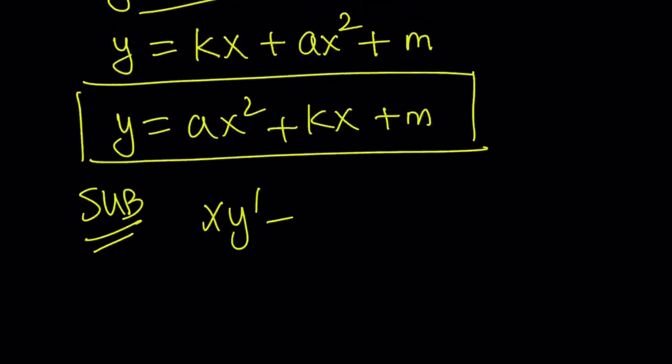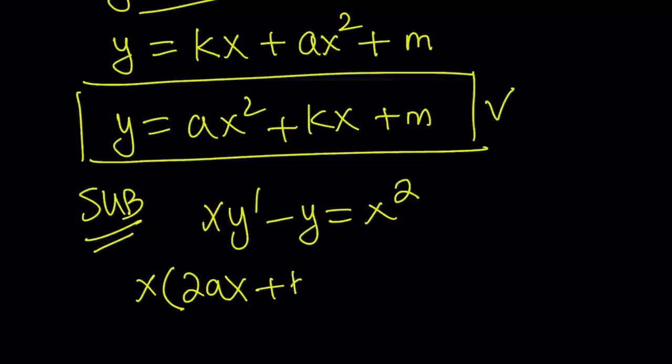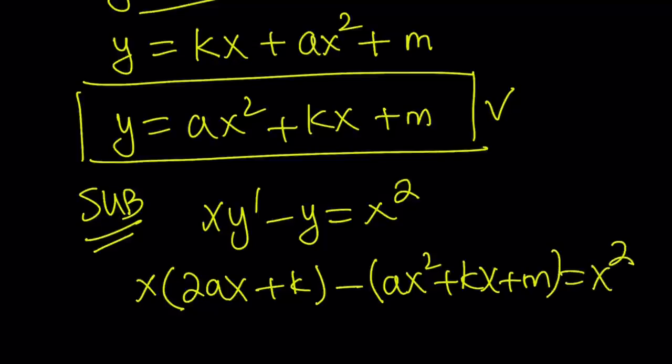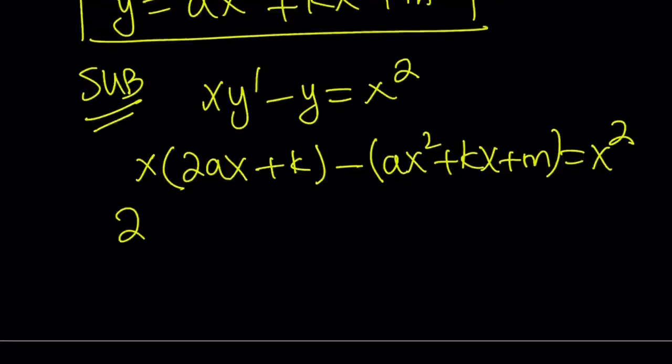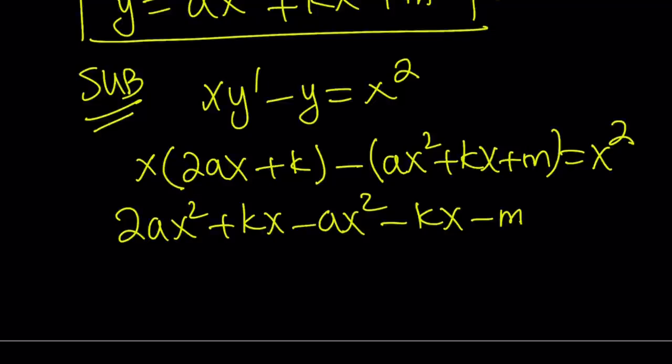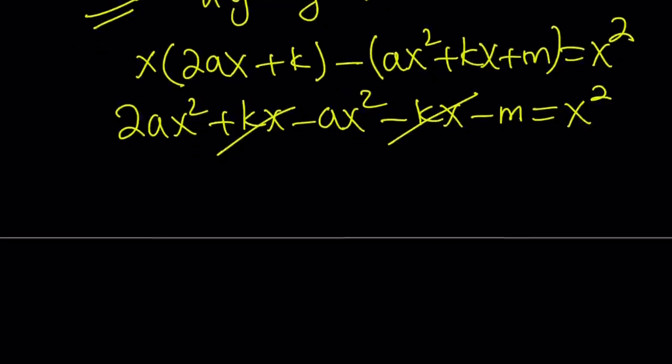Remember, we had xy prime minus y equals x squared. So x is going to be multiplied by y prime. Let's go ahead and differentiate this. This gives us 2ax plus k minus, if you subtract from this, the y itself, the difference should give you x squared. Now let's go ahead and simplify this. This gives us 2ax squared plus kx minus ax squared minus kx minus m. Notice that kx disappears because it's the solution to the homogeneous equation. Great. So they're going to cancel out, leaving us with x squared. And from here, we get the following. ax squared minus m equals x squared.